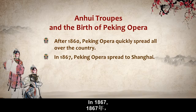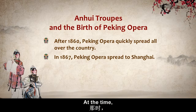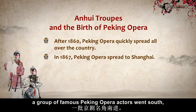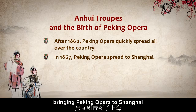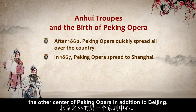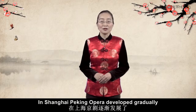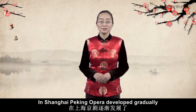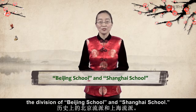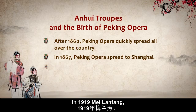In 1867, Peking Opera spread to Shanghai. At the time, a group of famous Peking Opera actors went south, bringing Peking Opera to Shanghai, and making Shanghai the other center of Peking Opera, in addition to Beijing. In Shanghai, Peking Opera developed gradually some unique characteristics, leading later to the division of Beijing School and Shanghai School.